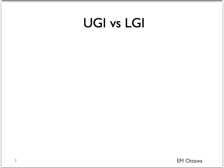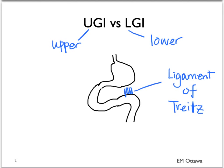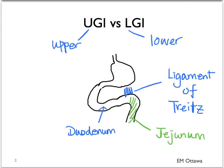In patients with a potential GI bleed, we usually divide it up into upper and lower GI bleed. The dividing line is the ligament of Treitz, which extends from the small intestine between the duodenum and the jejunum. Any bleeding that is proximal to that ligament is classified as an upper GI bleed. Any bleeding distal is lower.